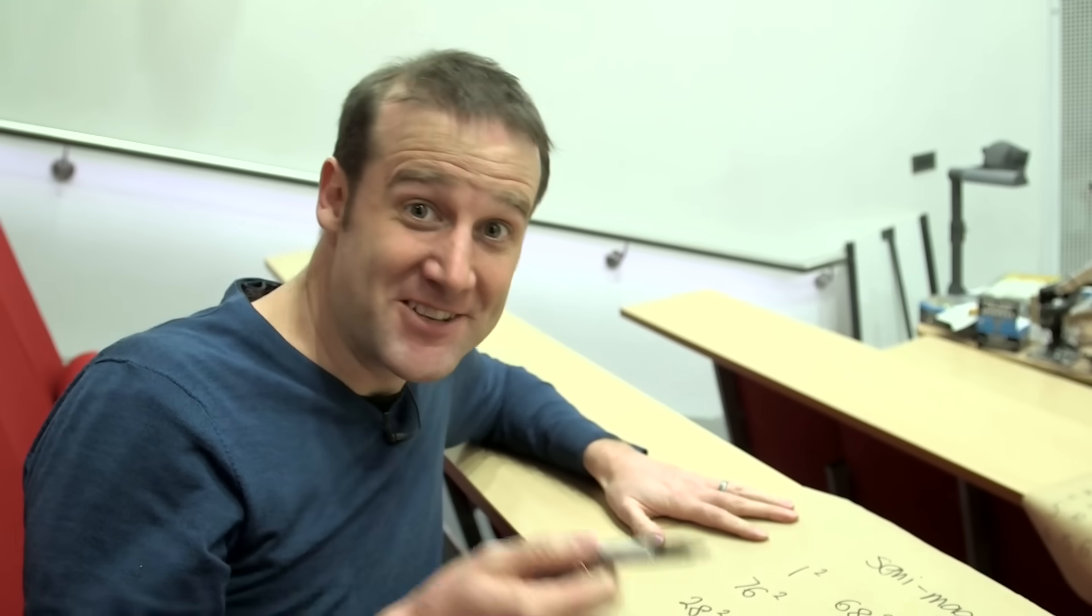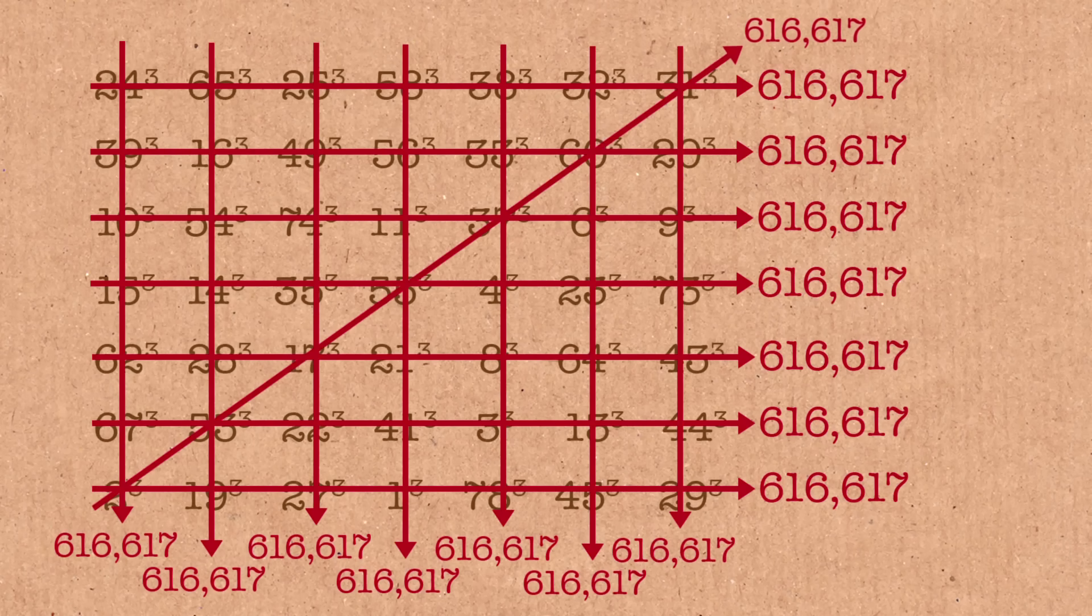Just last year someone found the first 7x7 magic square with all cube numbers and they won a prize. They won 500 euros. I mean, you know, and fame and mathematical...